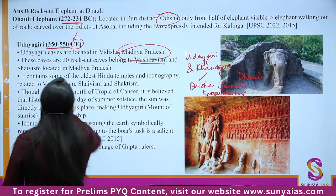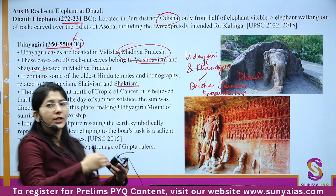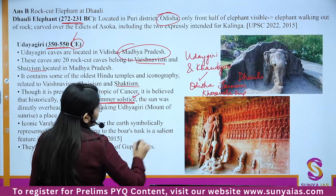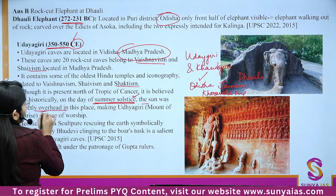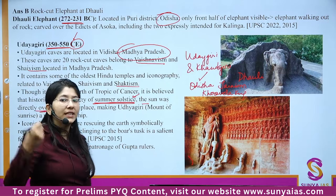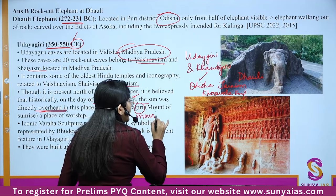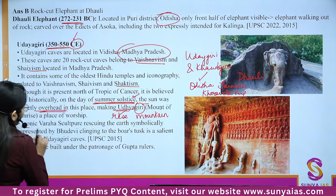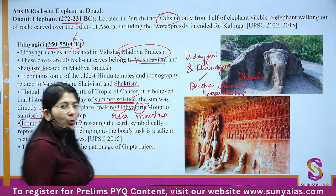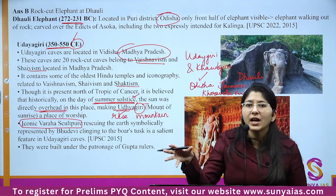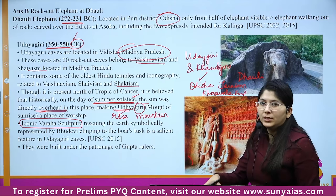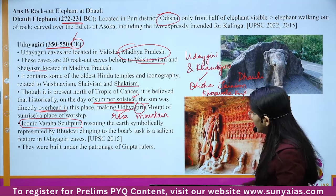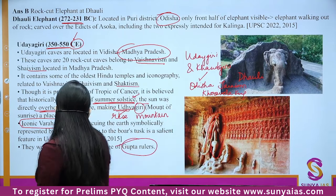Lingaraj Temple is an example of the Kalinga style of architecture. There are three major temple styles: Nagara (North India), Dravida (South India), and Vesara (mix of both). Lingaraj is referred to as 'Swayambhu' — swayam means self, bhu means originating — the Shivalinga originated on its own. It signifies the syncretism of Shaivism and Vaishnavism. Lake Bindusagar is located to the north of the temple.